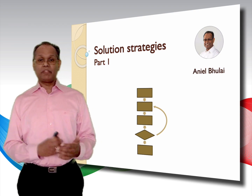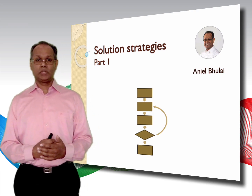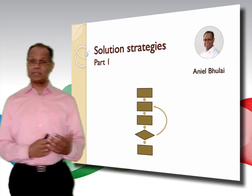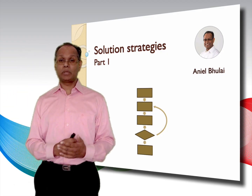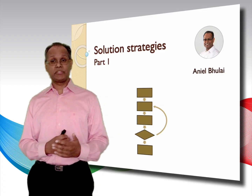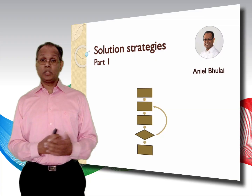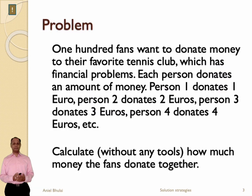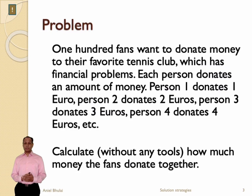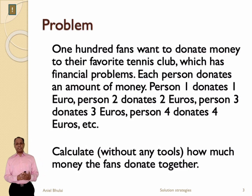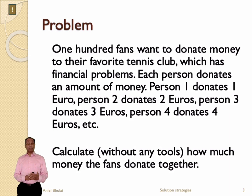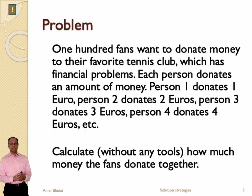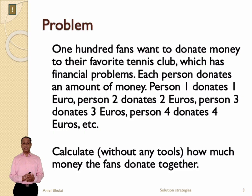As you might know, there are various strategies to solve everyday problems. Often a problem can be solved in different ways and there is not always a best way to solve problems. However, sometimes one way is more efficient than the other, or you might find one approach easier or more pleasant than the other. Consider for example the following problem. This problem is about a tennis club that has financial problems. The fans want to support the club with money, so each person donates an amount. The first person donates 1 euro, the second donates 2 euro, and so on.